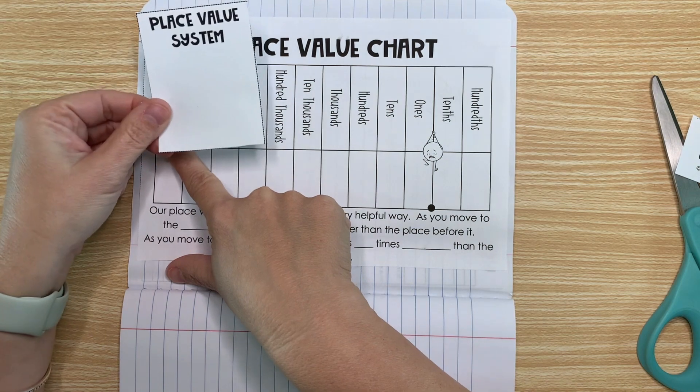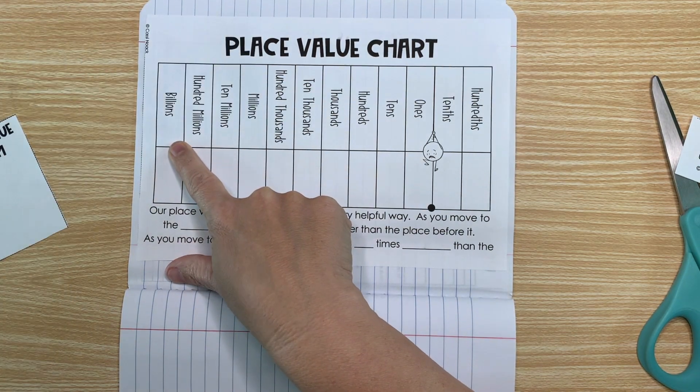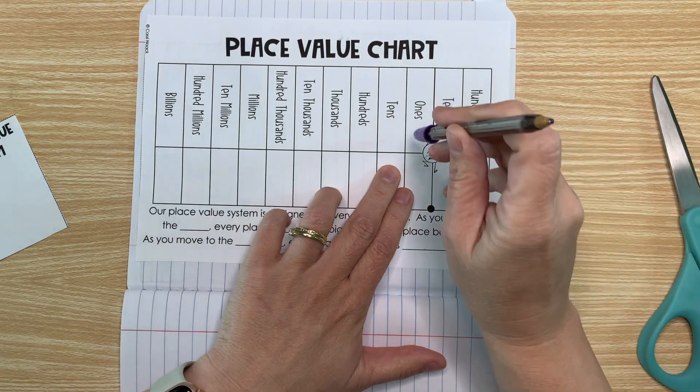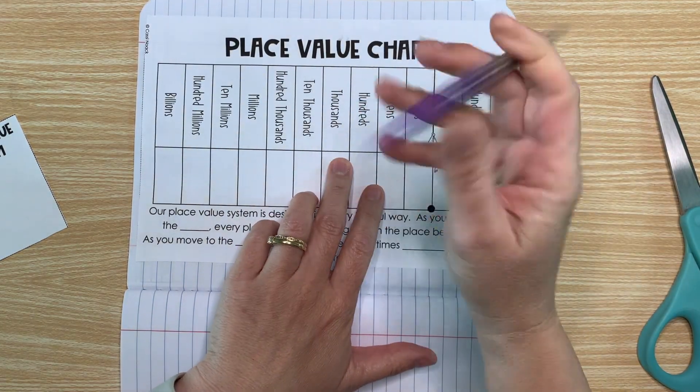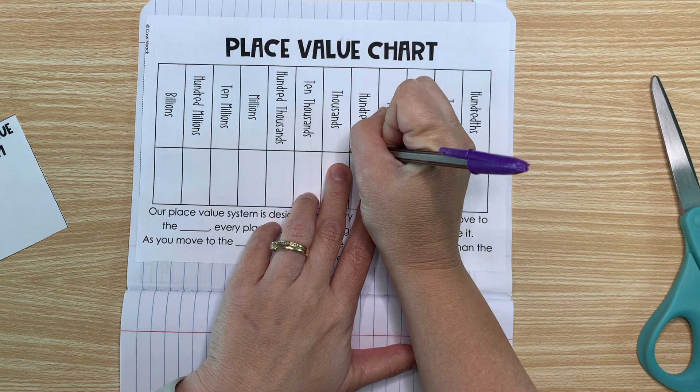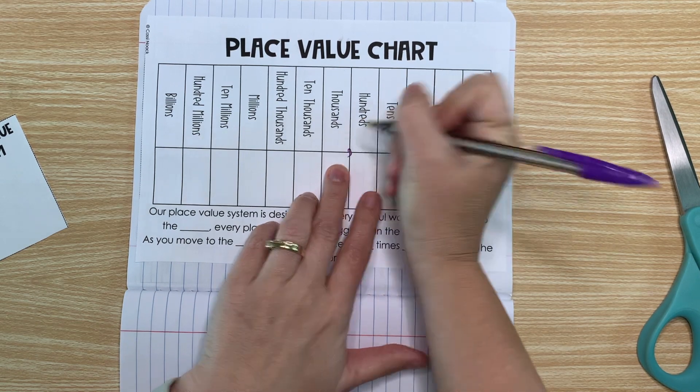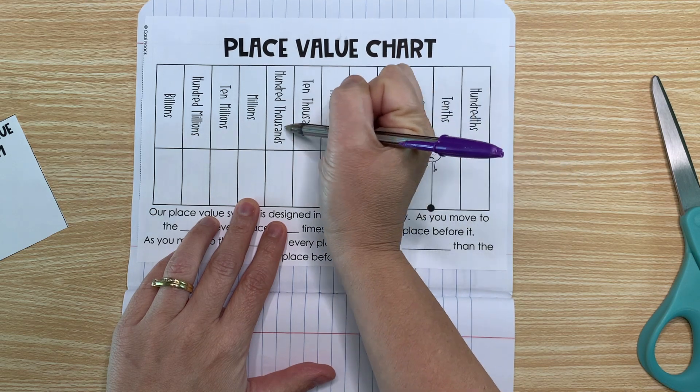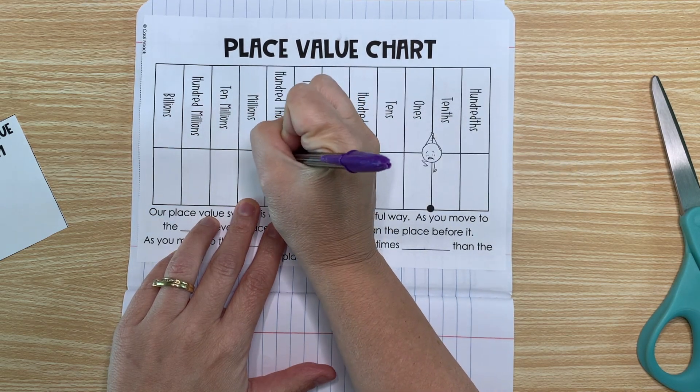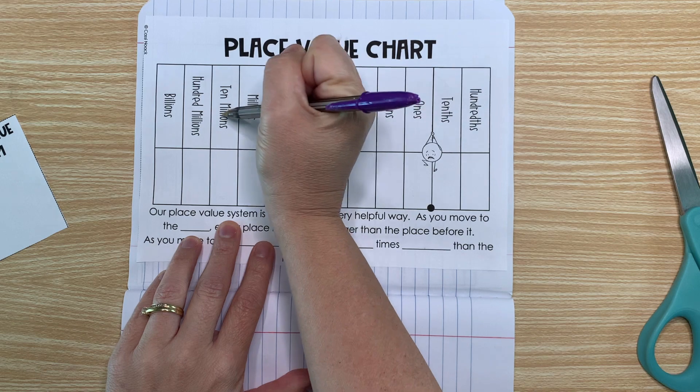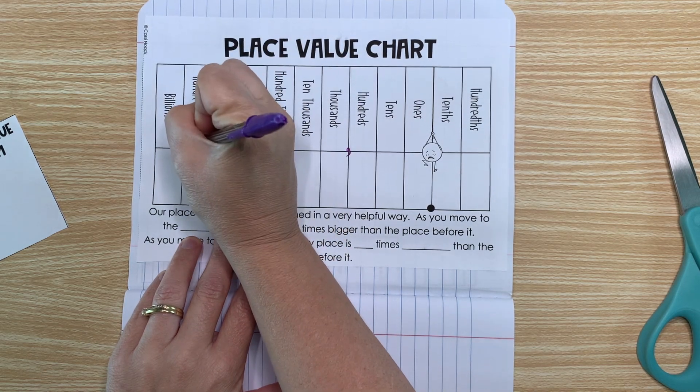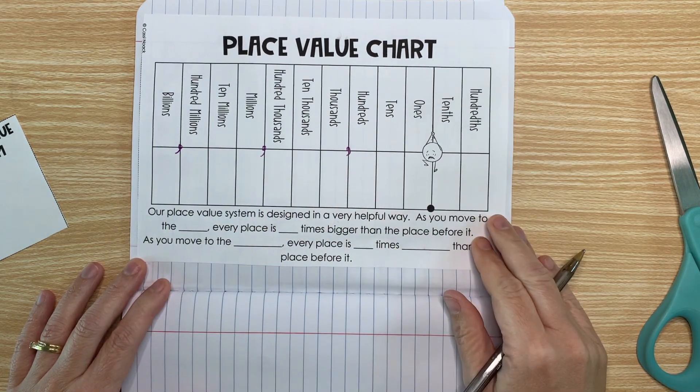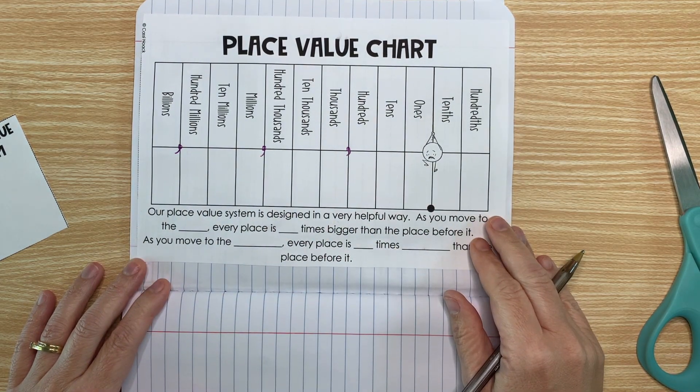So this is the place value system that we just talked about. There are periods on this place value system too. Every three digits makes a period. So I'm going to put a comma here just to remember that's where my period is separated. My next period is one, two, three. So I'll put a comma there. And my next period is the millions, one, two, three, and I'll put a comma there.